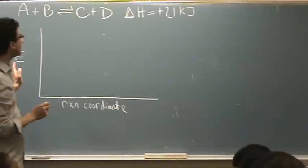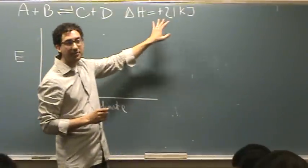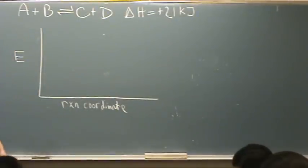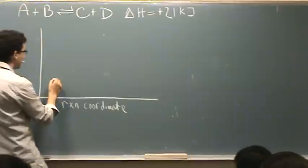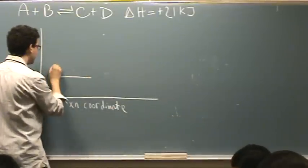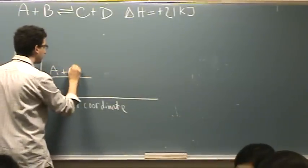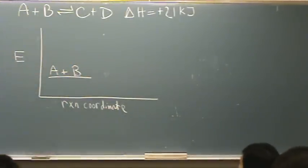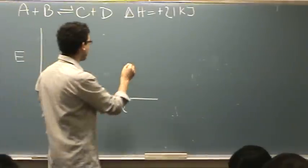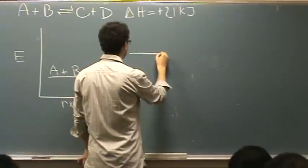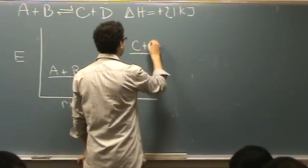And then this, since it's a positive, is an endothermic reaction. So that means the reactants A plus B are at a lower energy starting point than the products C plus D.